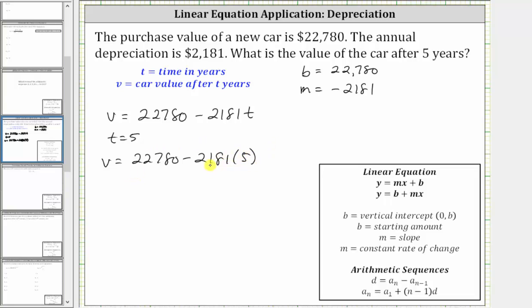Following the order of operations, we multiply before subtracting. 2,181 times five is equal to 10,905, giving us the value of v equals 22,780 minus 10,905. And 22,780 minus 10,905 is equal to 11,875.